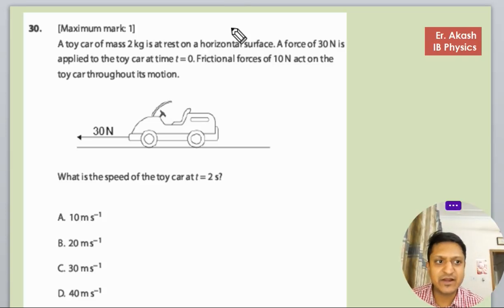There's another question and the question says that the toy car of mass 2 kg is at rest on a horizontal surface. A force of 30 newton is applied to the toy car at t equals to 0.